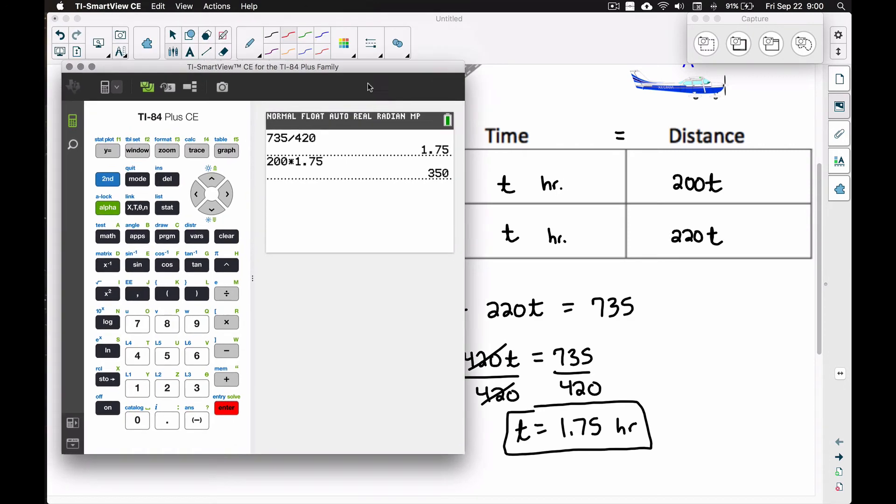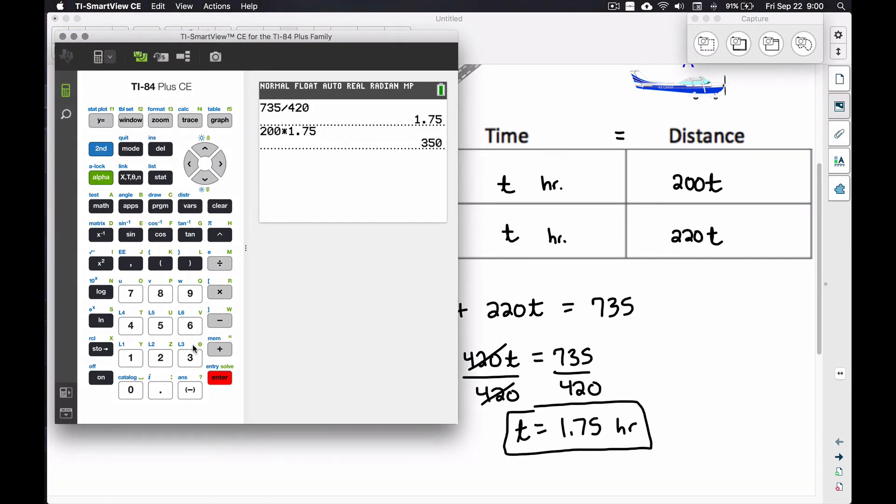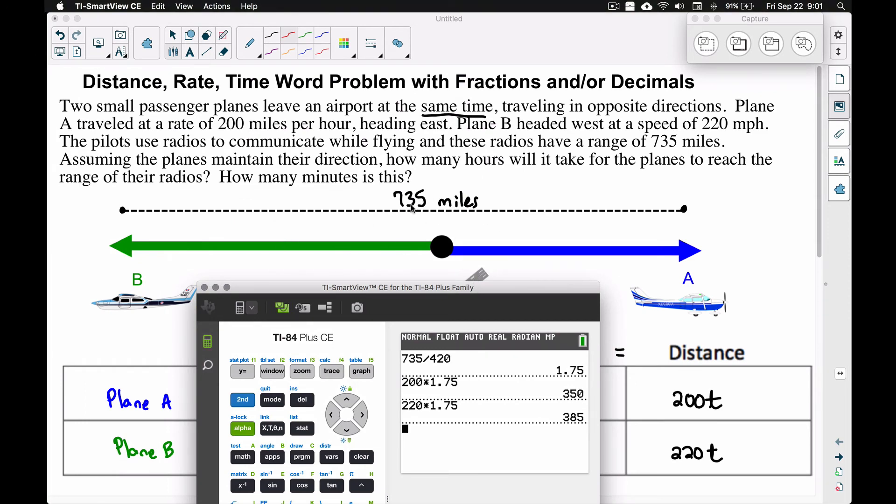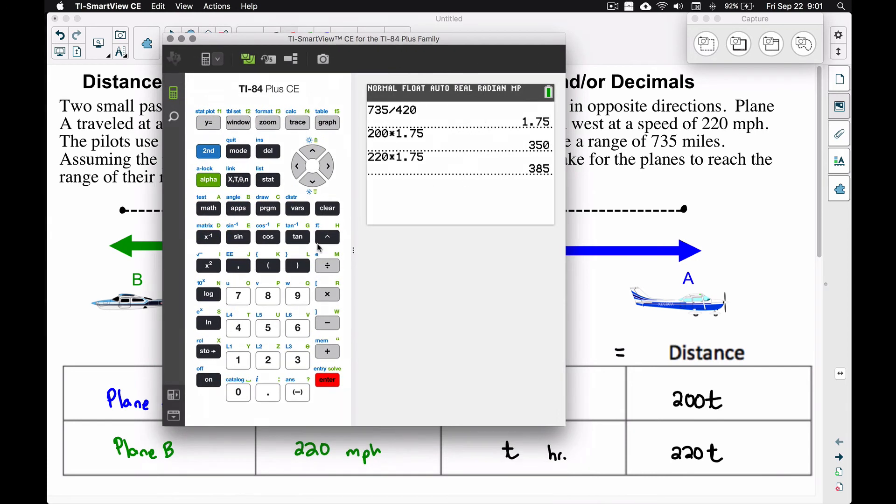Let's repeat this process for Plane B: 220 times 1.75 equals 385 miles. These two numbers here are the individual distances. Now we've already answered our question, but I'm trying to get you to think and understand where the 735 ties into this. These are the individual distances that each plane traveled. Since they were going in opposite directions, the sum of these two distances should be 735. If we take the 350 plus the 385 to check, notice the sum of those distances is 735 miles, which is the range of these radios. Anytime after 1.75 hours, assuming they're still flying in the same direction, they're going to lose communication because they're outside of the range of their radios.